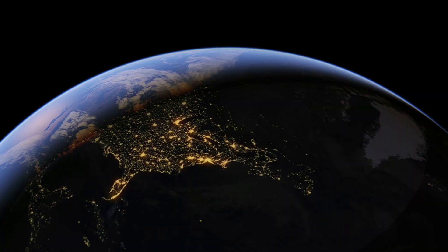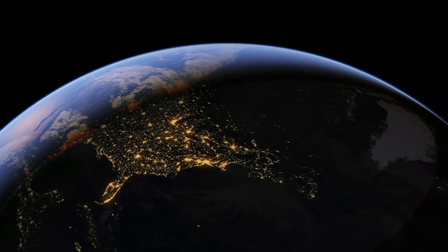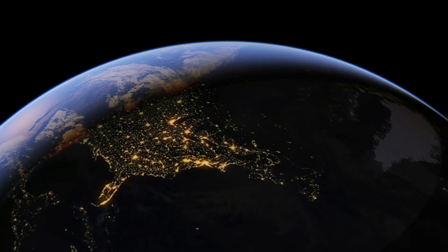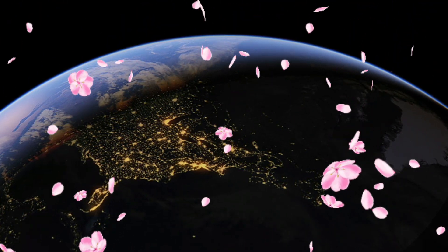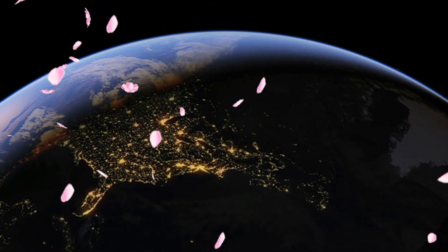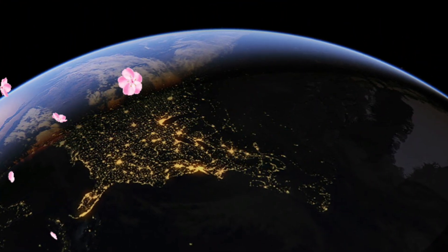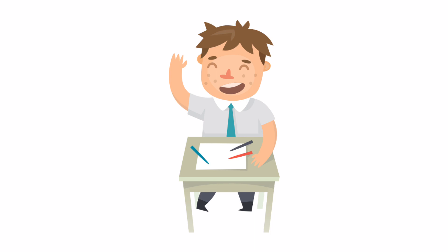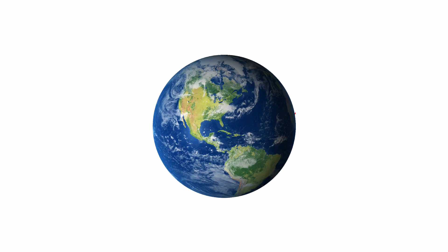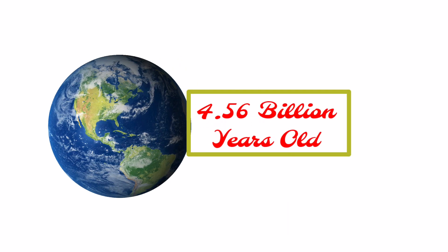The revolution of the Earth gives rise to different seasons. This has been possible because of the tilt of the axis of the Earth. Children, you know the Earth is 4.56 billion years old.